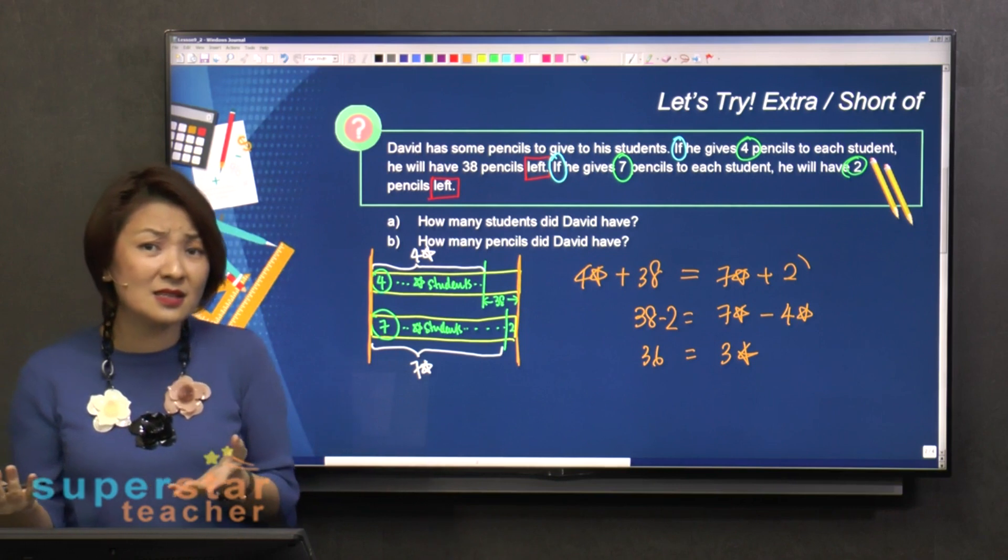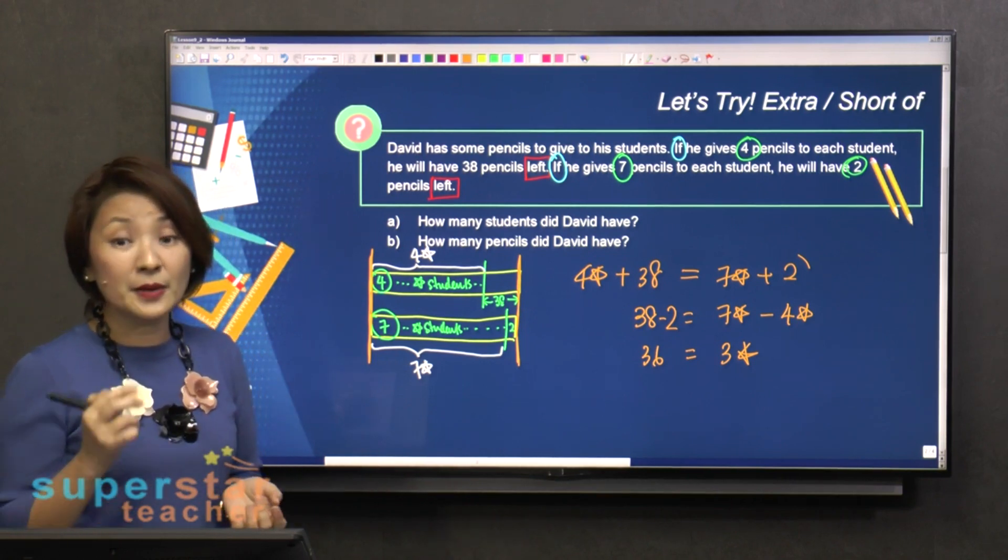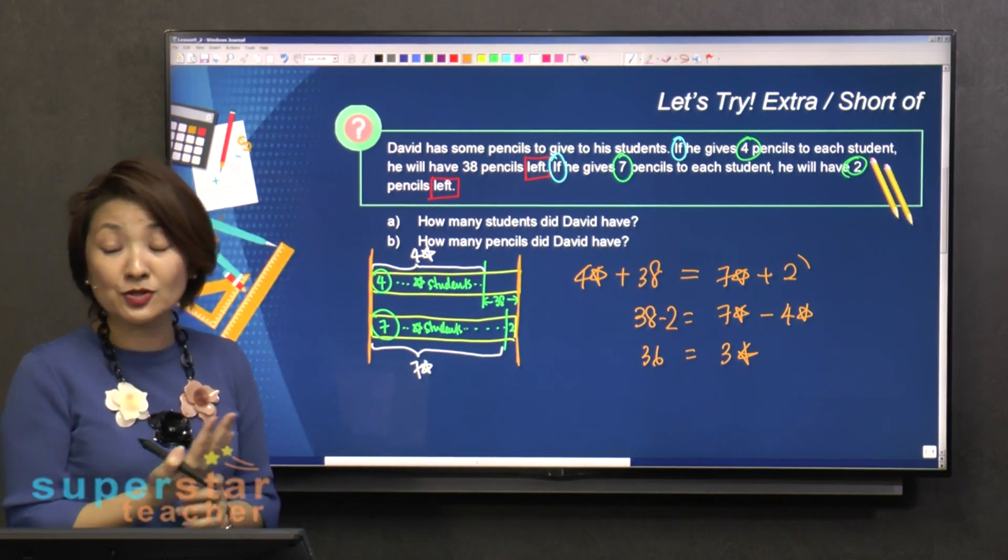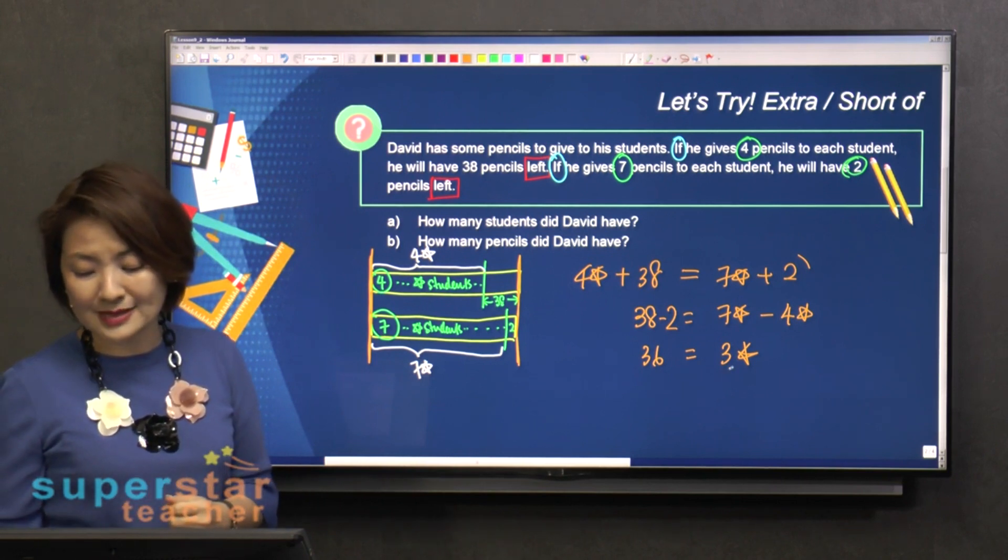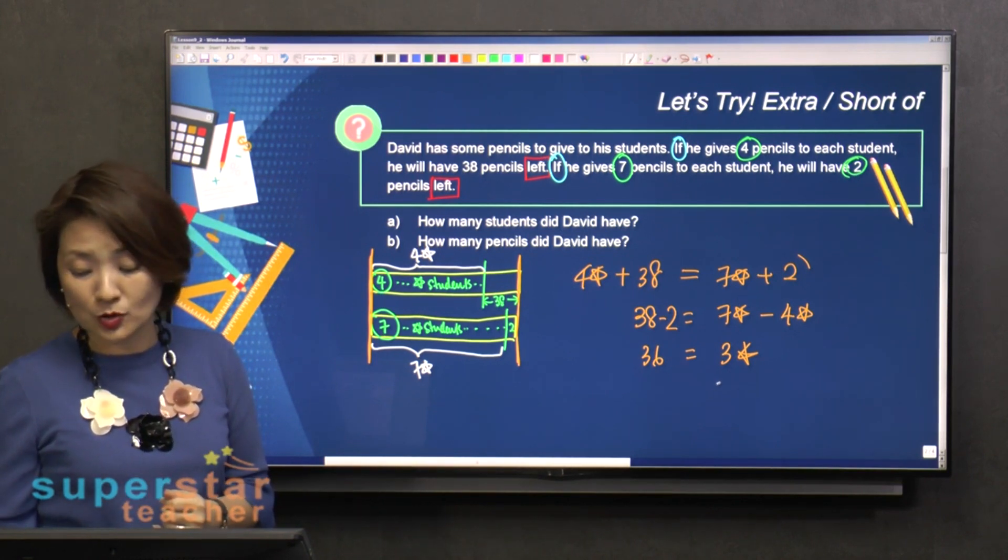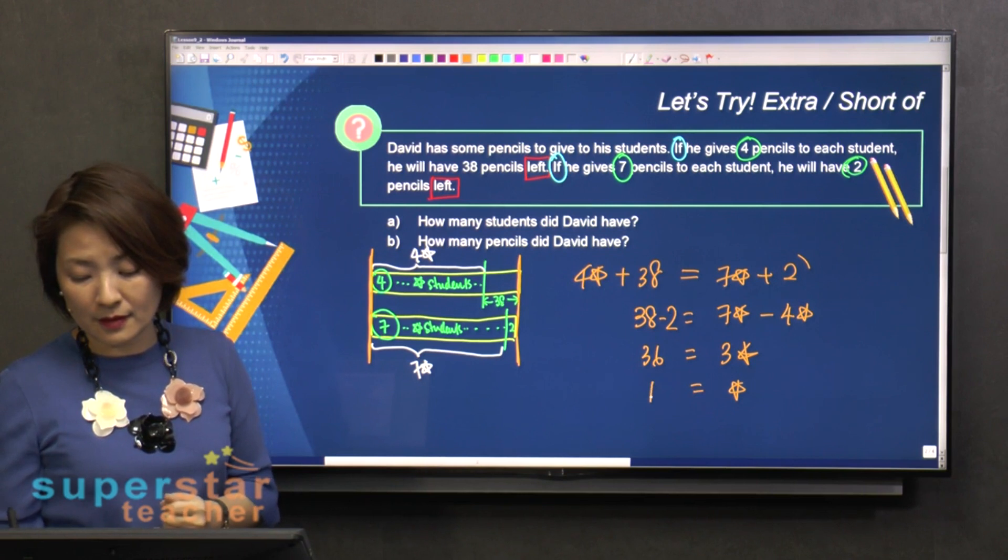Is that my answer yet? No, it's not. Because the question is asking for the number of students that David had. So three star is 36, so star will be 12.